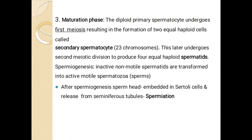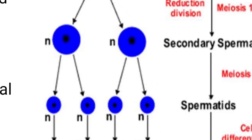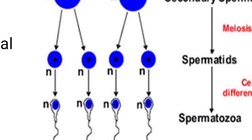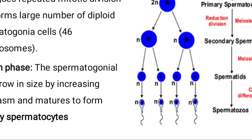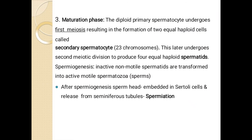After that, maturation phase occurs — when the diploid primary cell undergoes meiosis, it divides into secondary spermatocytes. This later undergoes second meiotic division to produce four equal haploid spermatids. Secondary spermatocyte is formed, then meiosis 2 occurs, and the cell divides into 4 spermatids. When the cell differentiation of these spermatids occurs, they divide into sperms — which we call spermatozoa.